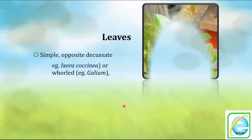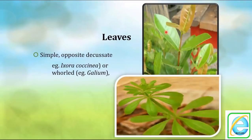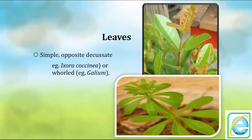Now the leaves. Leaves are simple — completely simple type. Opposite decussate: opposite means at the nodal point two leaves are present in opposite directions — one single pair. This single pair is at right angles to the next successive pair. Such alternately arranged phyllotaxy is called opposite decussate.